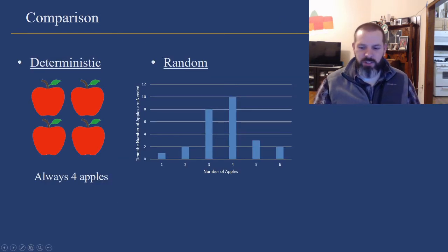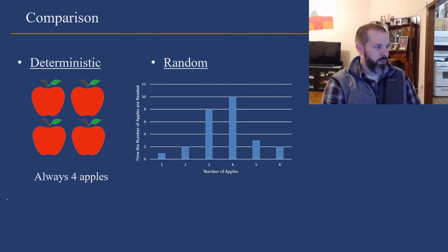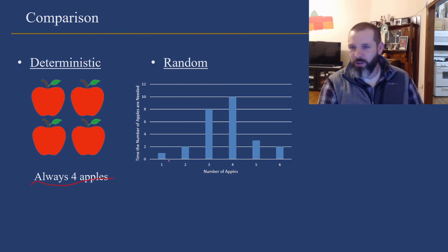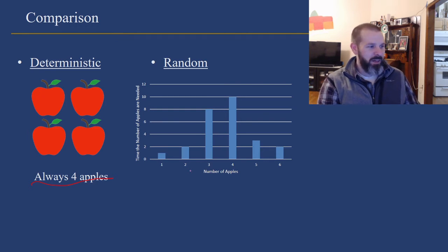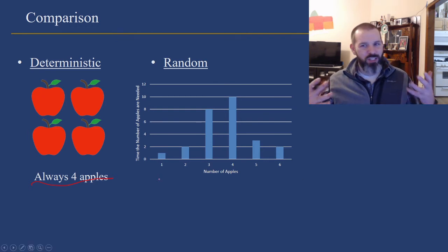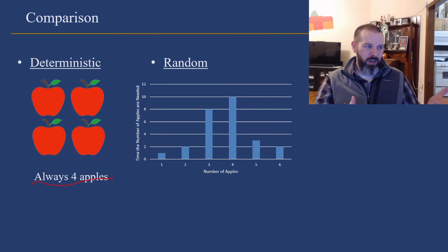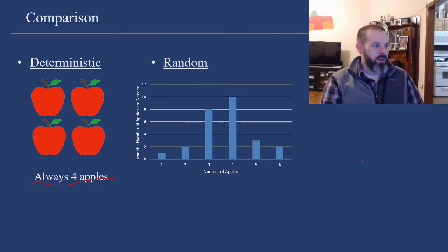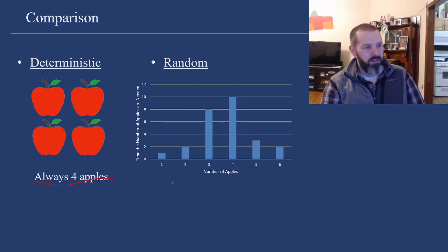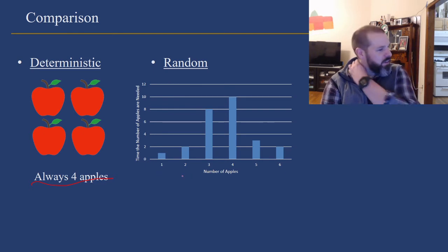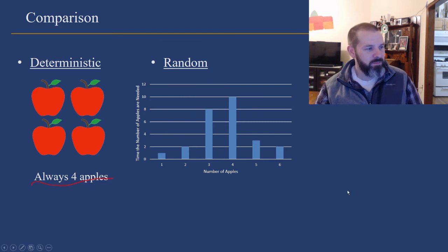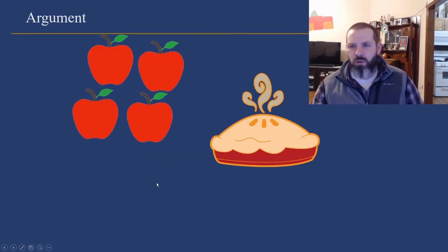So, if we lived in a purely deterministic world, which we do not, it will always take four apples to make one pie. We live in the real world where there's rotten apples, small apples, big apples, all kinds of different apples, then we need to make one pie. So maybe if I got a really, really giant apple, I would only need one apple to make one pie. But what we see here is a distribution of the number of apples we need to make a pie. Now, really, what this is is statistics and probability allow you to make an argument.